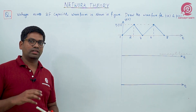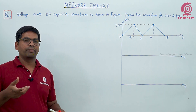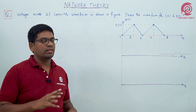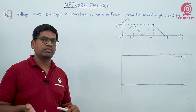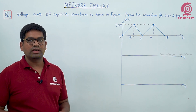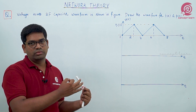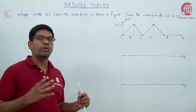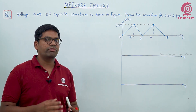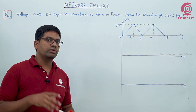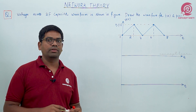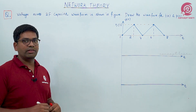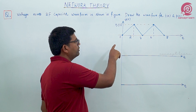Here we are going to discuss a question related to the waveform category. In this example we are giving voltage across a two farad capacitor, then we need to draw the waveform for the current as well as the power associated with that capacitor. This is also another important model — when a waveform is given, how to frame the equation, how to find other parameters, and how to draw the waveform.